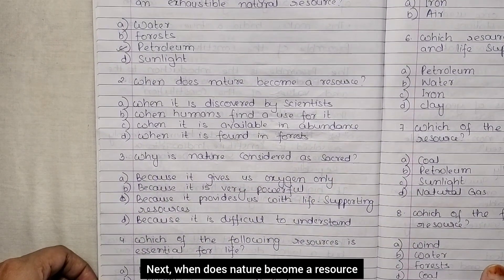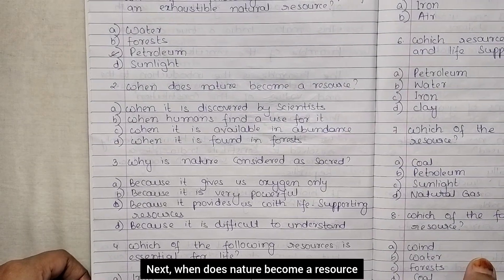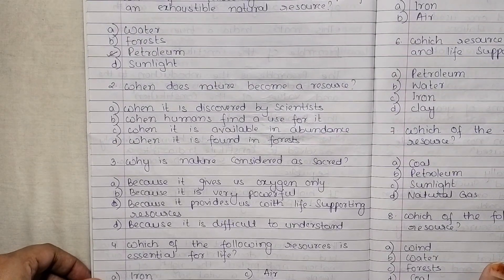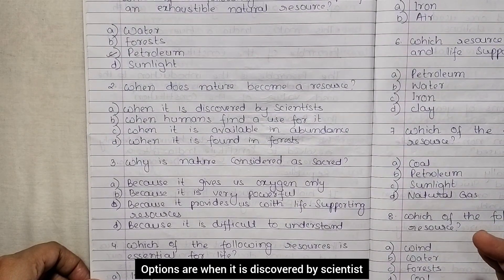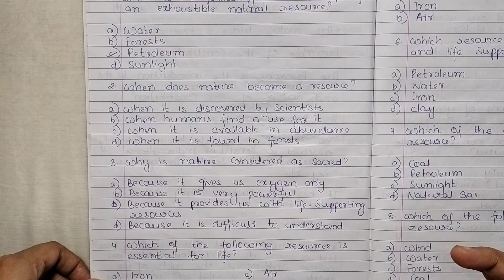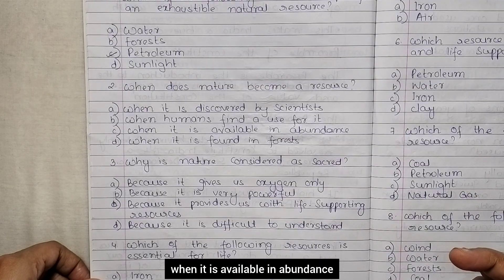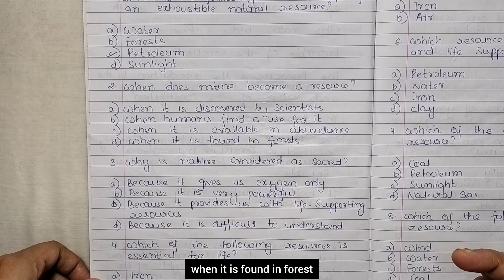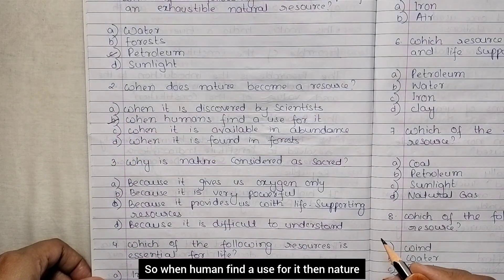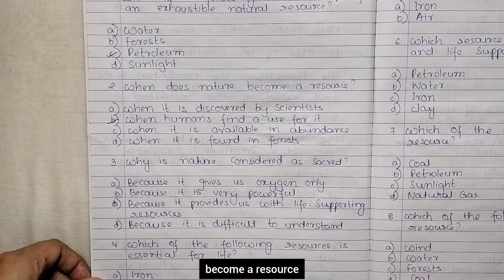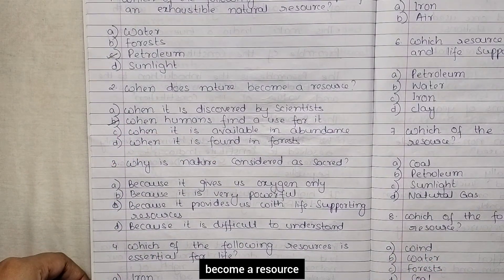Next: when does nature become a resource? Options are: when it is discovered by scientists, when humans find a use for it, when it is available in abundance, when it is found in forest. When humans find a use for it, nature becomes a resource.